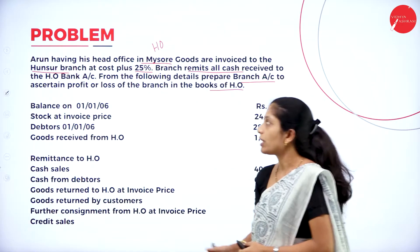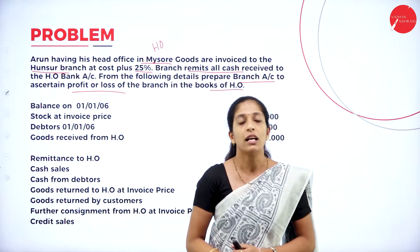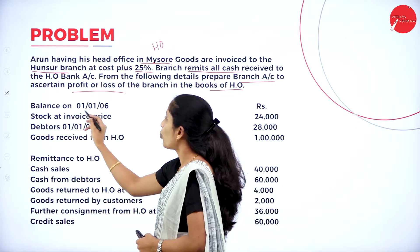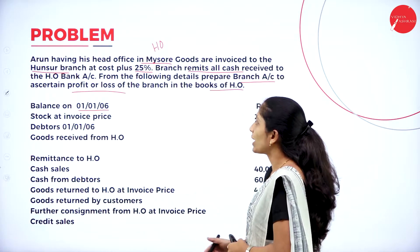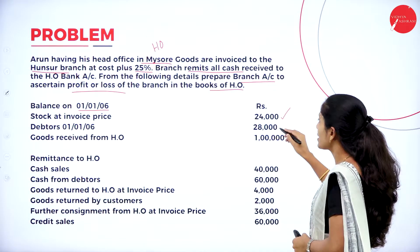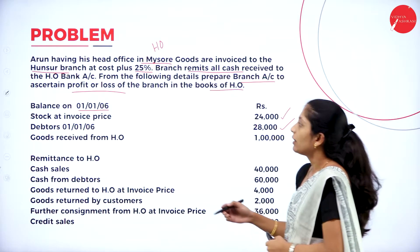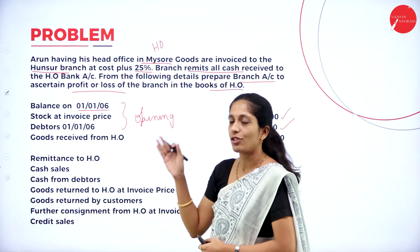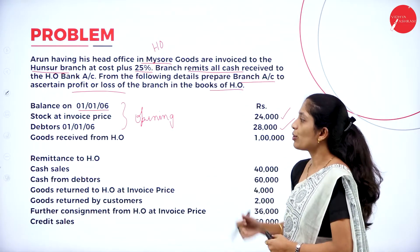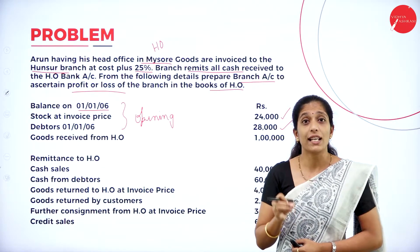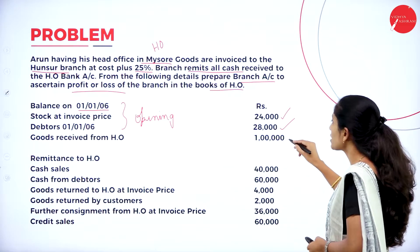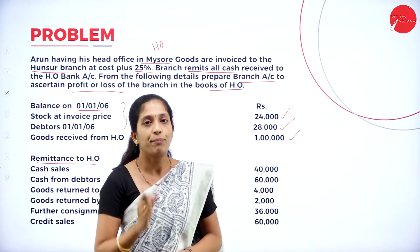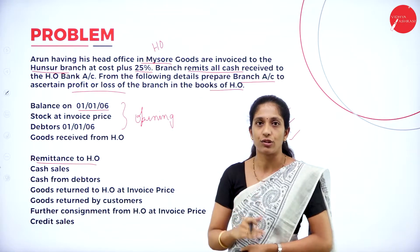We prepare the branch account in order to ascertain net profit or net loss. Now let us go through the particulars. The balance on 1/1/06 — that is the opening balance — shows stock at invoice price 24,000 and debtors 28,000. They have also given goods received from head office, meaning the branch received certain goods from the head office worth rupees 1 lakh. They have also given remittance to the head office.